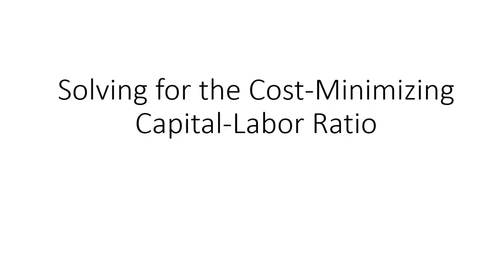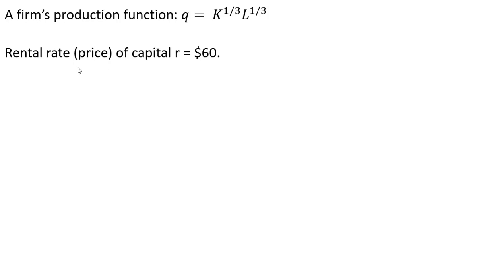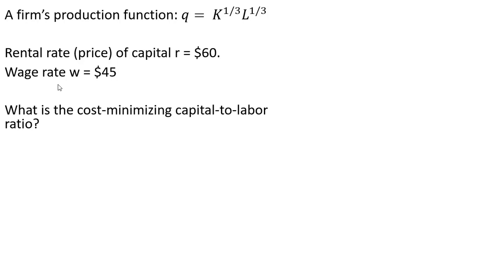Hello, in this video we're going to solve for the cost minimizing capital-labor ratio. We have a firm's production function given as follows. The rental rate or price of capital is $60 and the wage rate is $45. We want to find the cost minimizing capital to labor ratio.